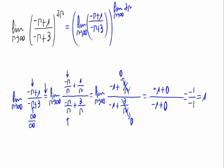Which is 1. So we would have 1 raised to the limit when n approaches infinity of 2n, which would be infinity, making the result 1 raised to infinity — and that's also an indeterminate form. An indeterminate form of 1 raised to infinity will be a limit involving the number e.